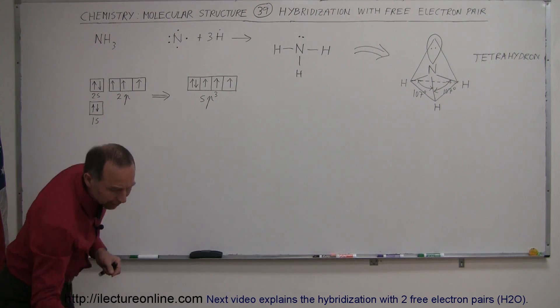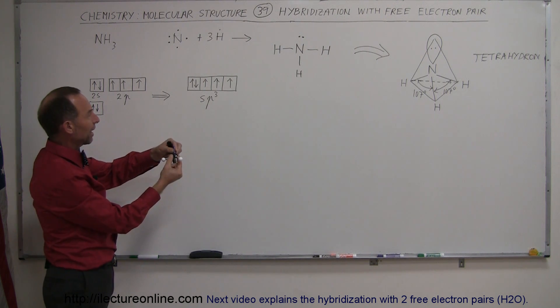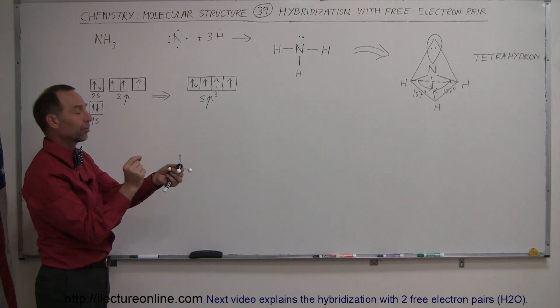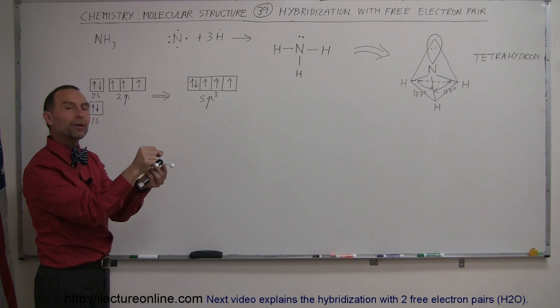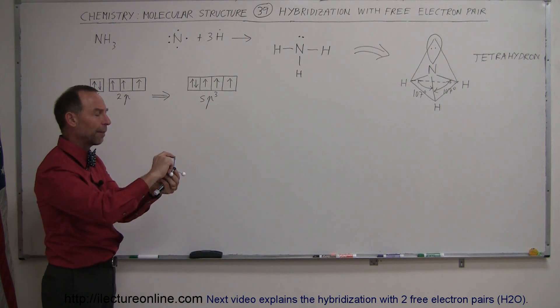So what happens then is it creates three hybridized bonds like that, three sp3 bonds, and a fourth sp3 bond sticking straight up like this. However, this one will not be utilized in bonding, only these three will be utilized in bonding. So what happens to this one right there?